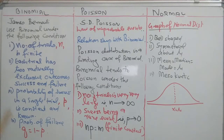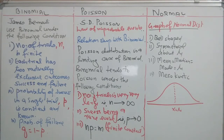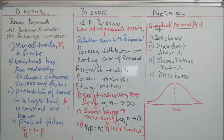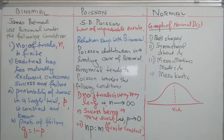Binomial distribution was suggested by James Bernoulli. We use it under the following conditions: (1) The number of trials n is finite. (2) Each trial has two mutually exclusive outcomes — success and failure (dichotomous alternatives). (3) The probability of success in a single trial, p, is constant and known. (4) The probability of failure q equals 1 − p.